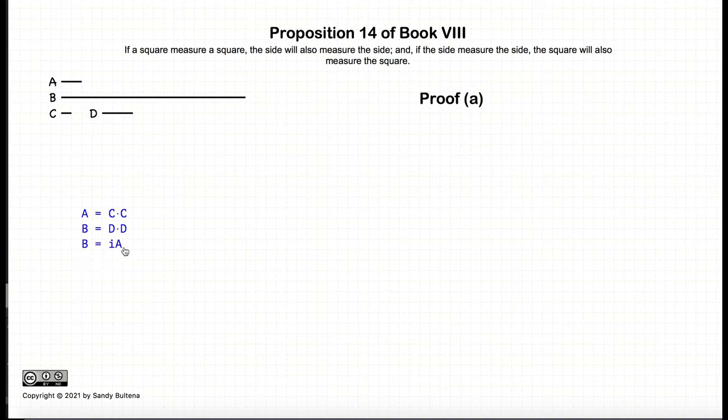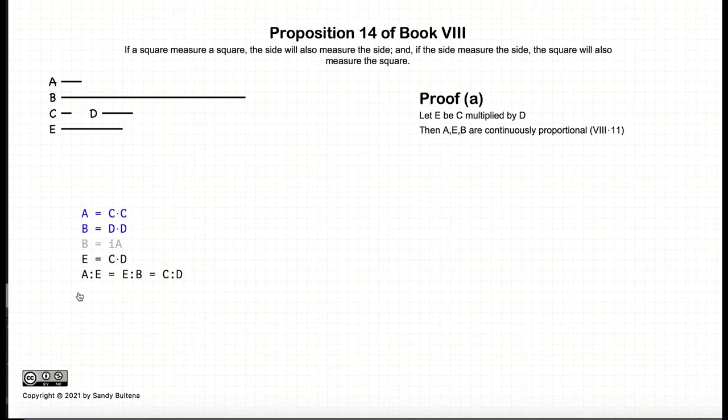So let's start with the first part, where we have that A measures B. We create a number E such that it is equal to C multiplied by D. And we have that A to E equals E to B equals C to D, which was proven in Proposition 11 of this book.